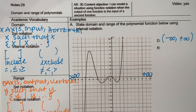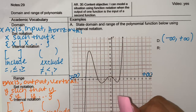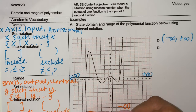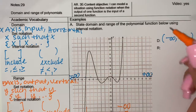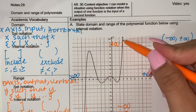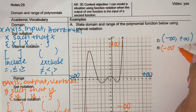The range — you're going to start from the bottom and then go to the top. Down here is negative infinity. Is there anything stopping this from going down? No. And up here is positive infinity. Is there anything stopping it from going up? No. So everything is included — negative infinity to positive infinity.